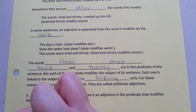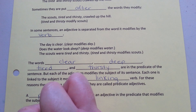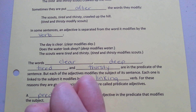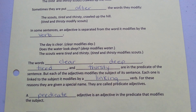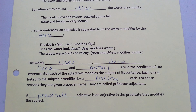A predicate adjective is an adjective in the predicate that modifies the subject. Now you are ready to do the exercise on pages 3 and 4 of this assignment.